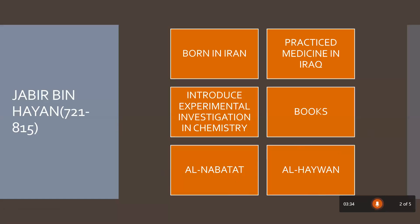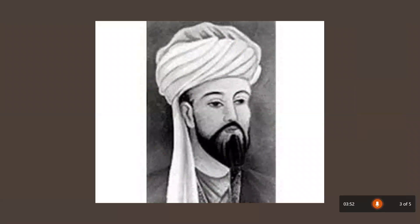You have to understand that Muslim scientists have made a lot of contribution to science. The first of all scientists is Jabir bin Hayyan, and after Jabir bin Hayyan we have another scientist.